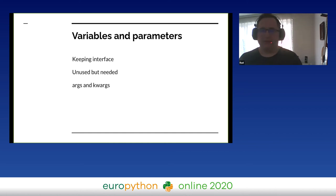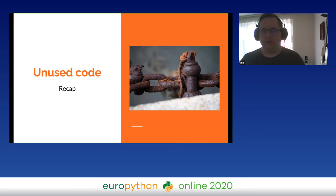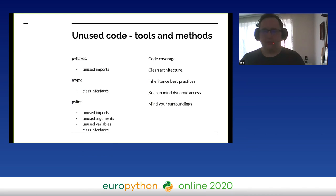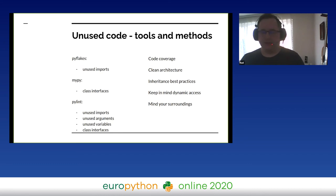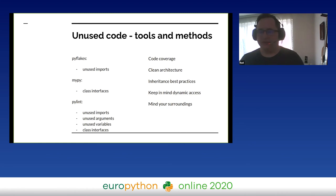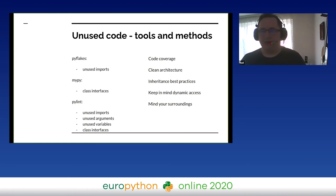PyLint is pretty good at finding out which variables are used and which are not. To sum up: PyFlakes finds unused imports, MyPy keeps class interfaces, PyLint finds lots of unused stuff, and you can use code coverage, clean architecture, and good practices to help you here.